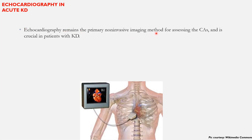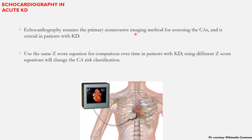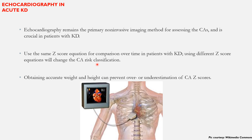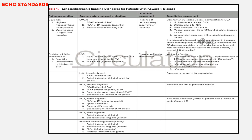Echocardiography remains the primary non-invasive imaging modality for assessing coronary artery aneurysms in Kawasaki disease. It is crucial to use the same Z-score equation for comparison over time, as using different Z-scores will change the coronary artery risk classification. Accurate weight and height measurement can prevent over- or underestimation of coronary artery Z-scores. The AHA has provided specific echo standards which can be referenced in detail.